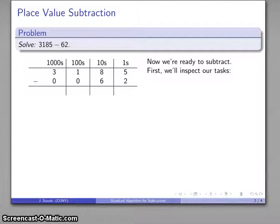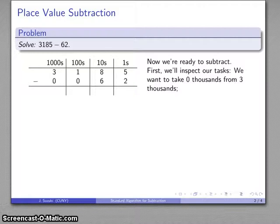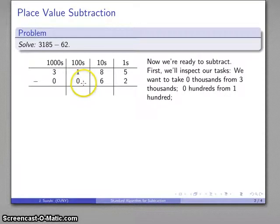Before I actually perform the subtraction, it's worth looking at what we're going to have to do. So what I have is I have these things and I'm going to remove these things. So let's see what we're going to do. I want to take 0 thousands from 3,000s. Well, I can do that. I want to take 0 hundreds from 1 hundred. Again, not a problem. I want to take 6 tens from 8 tens. Not a problem.